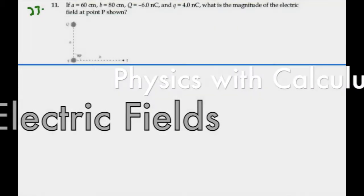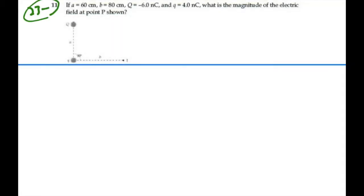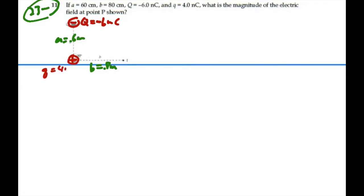Here's problem 2311. A is equal to 60 centimeters, 0.6 meters, and B is equal to 80 centimeters, 0.8 meters. Big Q is minus 6 nanocoulombs, so we have a negative charge here. Little Q is 4 nanocoulombs, so we have a positive charge. What is the magnitude of the electric field at point P shown?